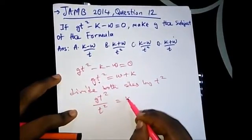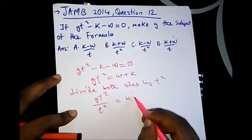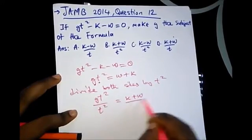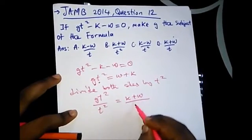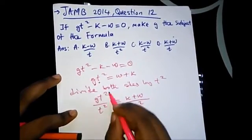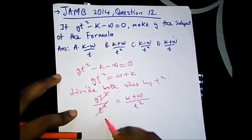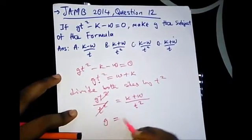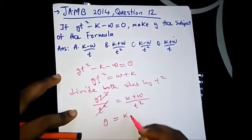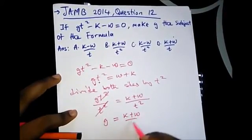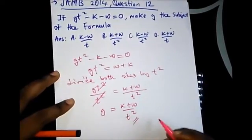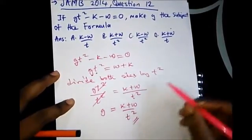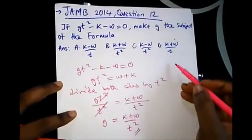k comes first in alphabetical order, so dividing both sides by t² — this cancels — and g = (k + w) / t². This is the correct option, which is option B.